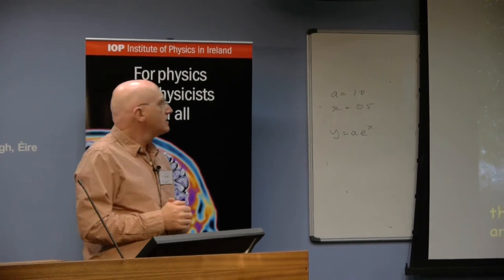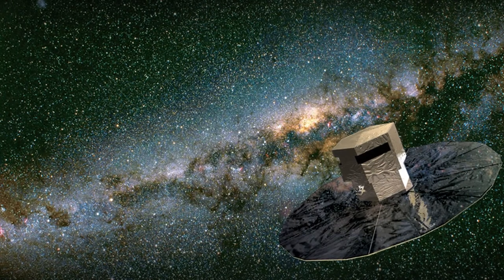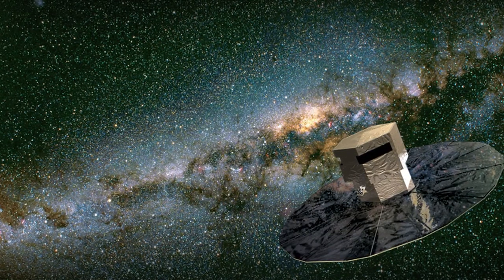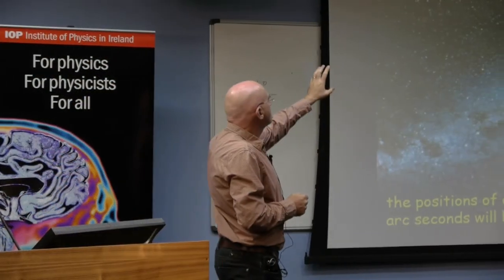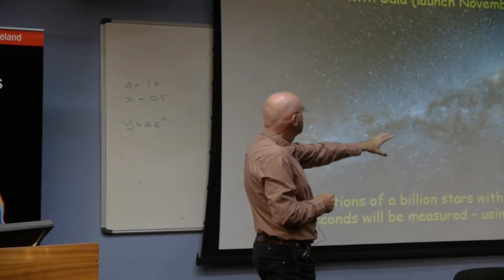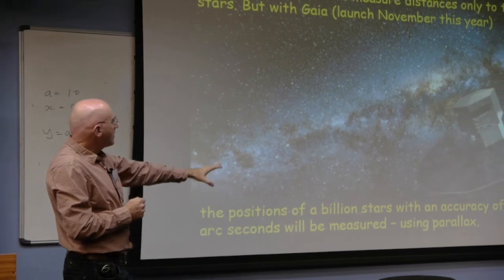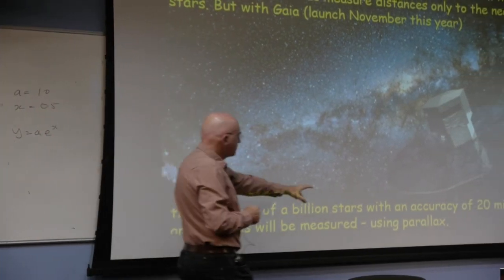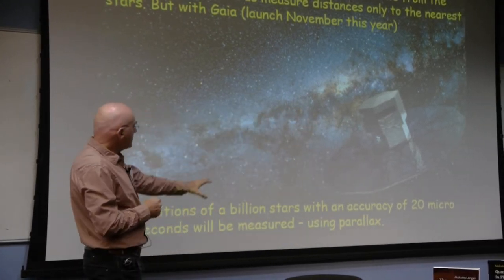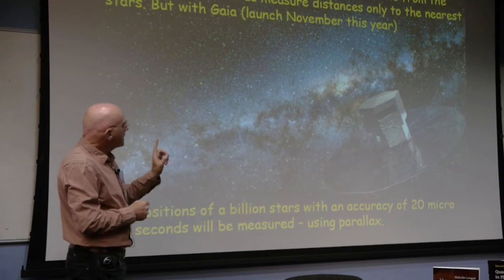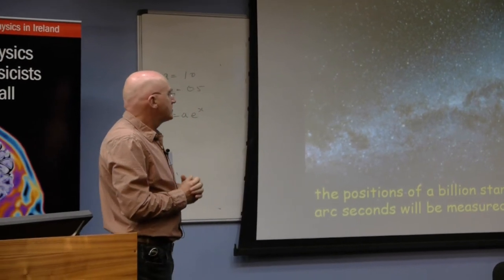But parallax very soon is going to go way beyond just the simple ground-based measurement of telescopes based on the Earth moving around the Sun. Towards the end of this year, ESA will be launching this so-called Gaia mission, which will use parallax to measure the positions of a billion stars with an accuracy of 20 millionths of what we can achieve from the ground.